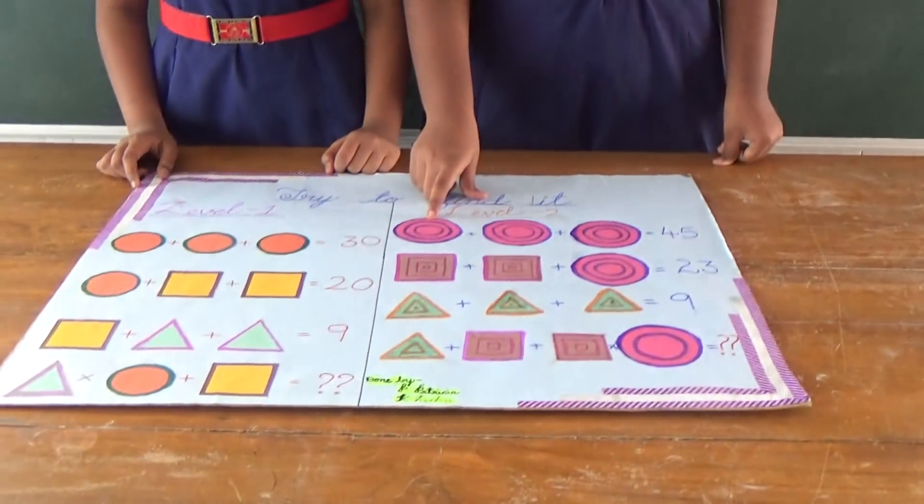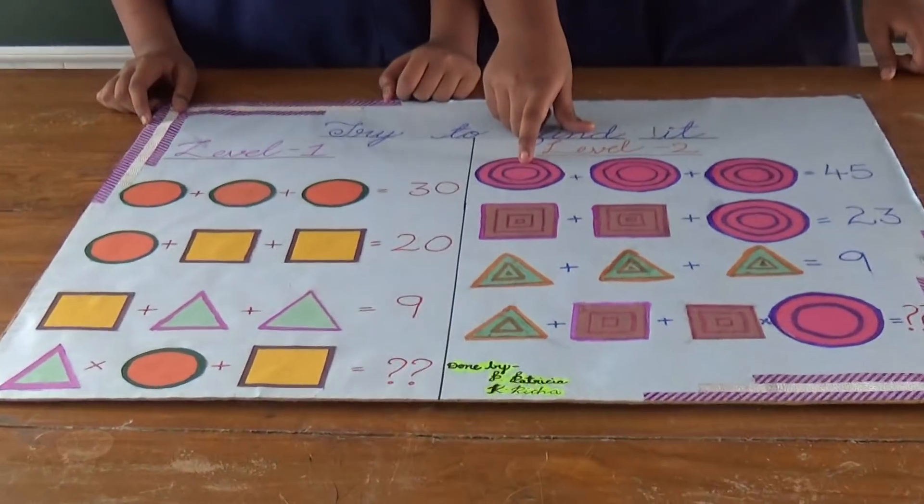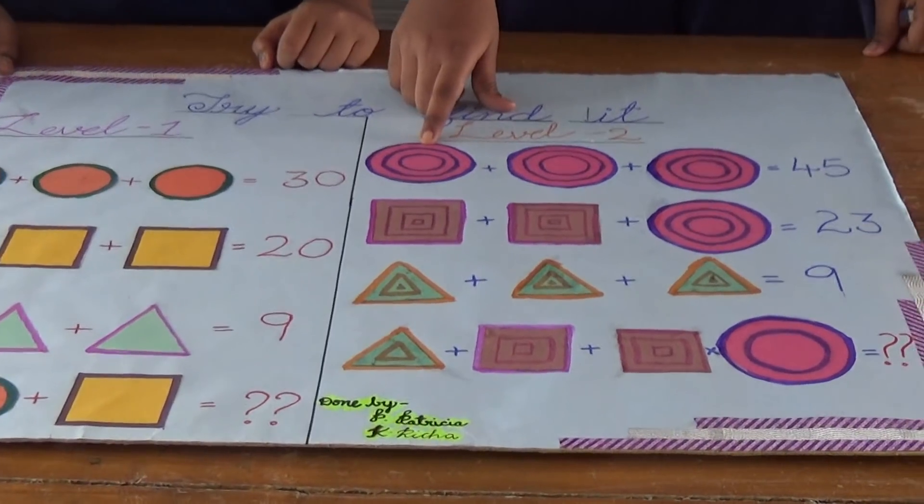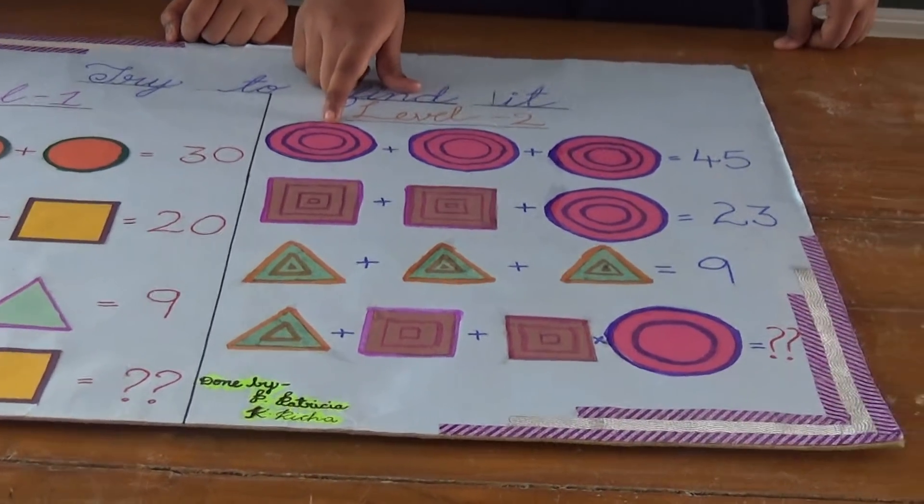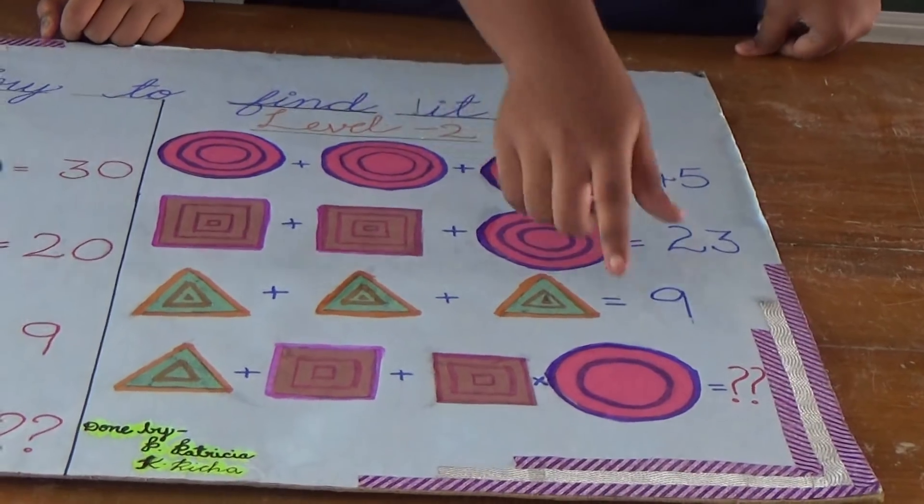Here we have 3 circles with a total value of 15. So 15 divided by 3 is 5—the value of each circle ring is 5. Here we have only 2 circle rings.